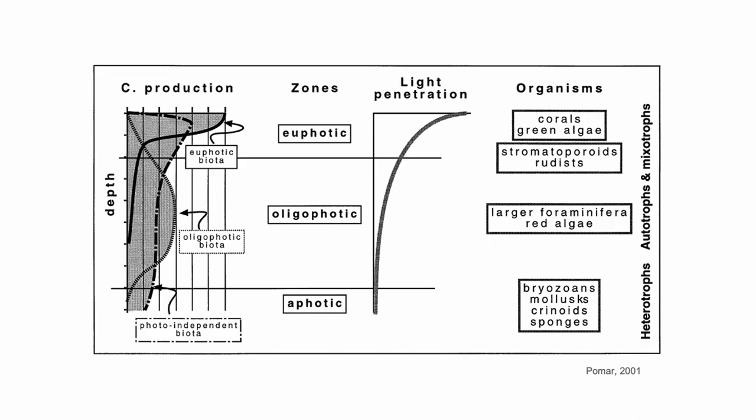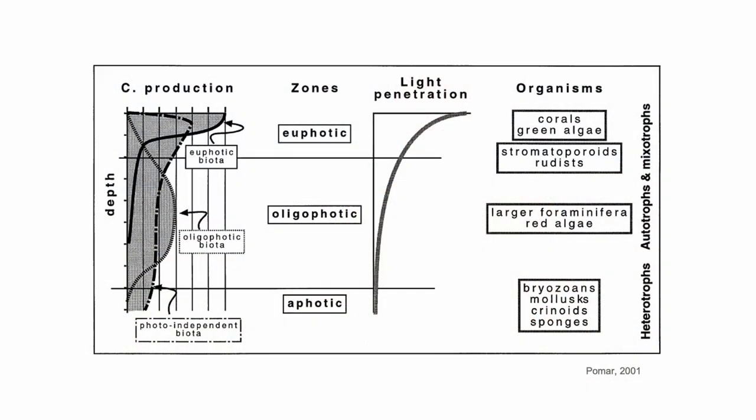Now, focusing on carbonate production, production can be distinguished by the type of producers. Euphotic biota, which require a lot of light, produce mostly at the top of the water column. Oligophotic biota, which thrive where there is some light but not in the light-saturation zone, produce sediment deeper in the water column. Aphotic biota produce sediment throughout the water column, with perhaps a slight preference for shallow water where there are more nutrients. So light penetration determines what biota produces where.